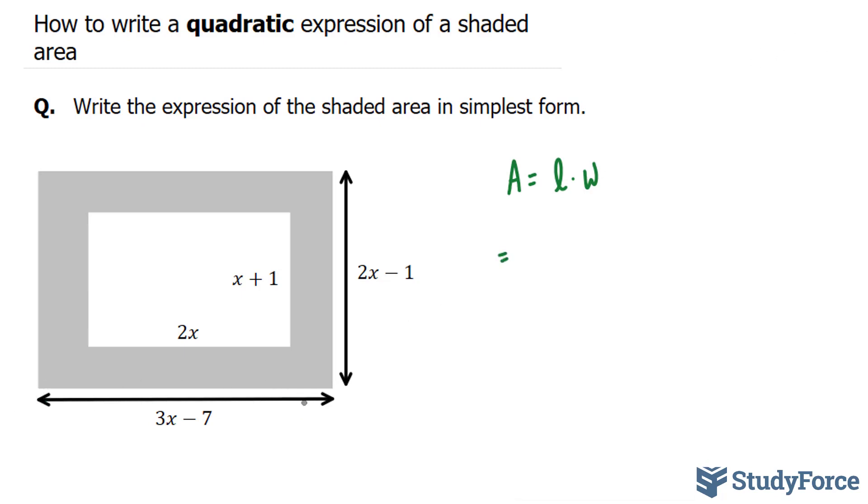So this is our length, this is our width, and it doesn't really matter which one you assign as your length or your width. So we have 3x minus 7 times 2x minus 1.